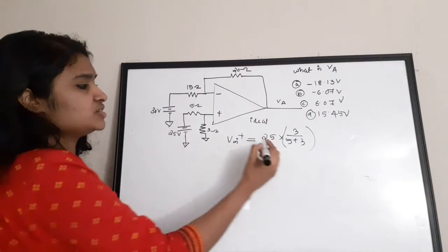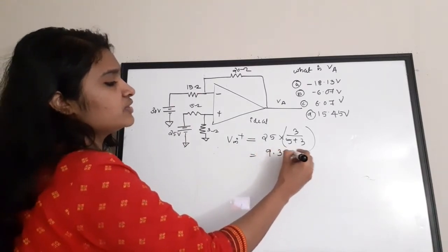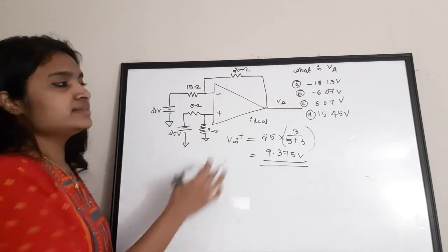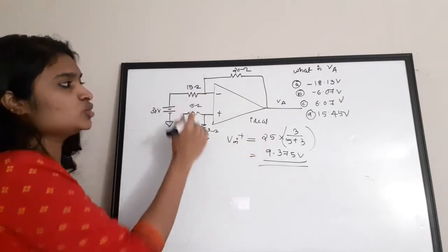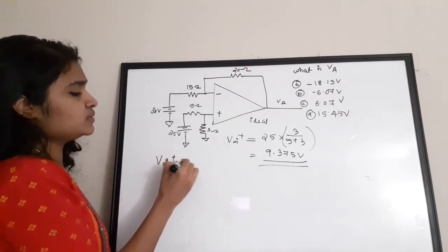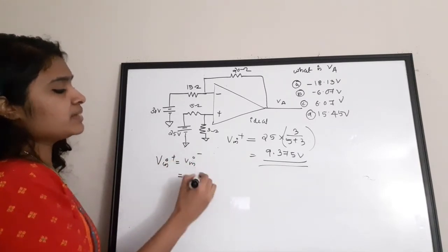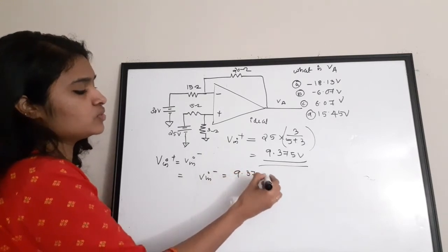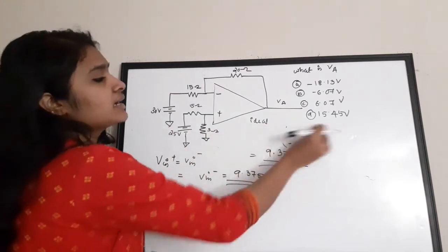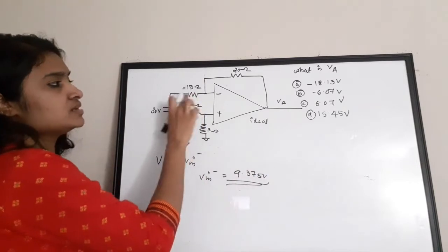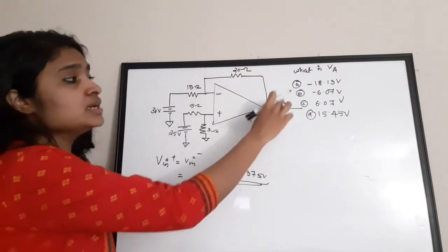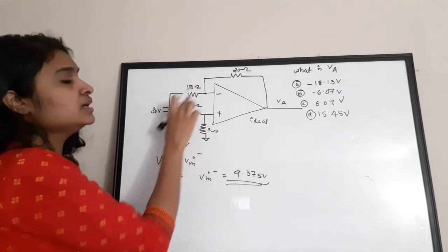Applying the voltage divider rule to find V_in+: V_in+ = 25 × 3/(5 + 3) = 9.375V. Since this is an ideal op-amp, there is a virtual short circuit between the input terminals, so V_in+ = V_in− = 9.375V. Now we need the current through the 15Ω resistor connected to the inverting terminal.